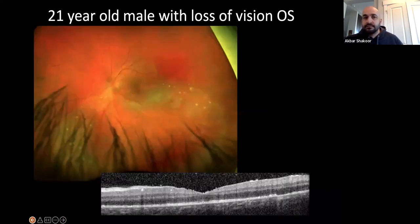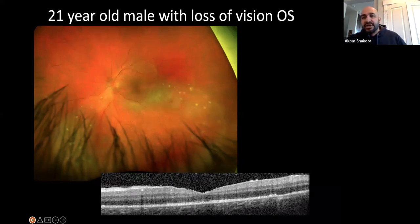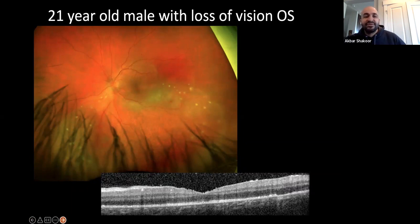Any questions? One thing not included in this presentation — because it's a large topic covered in another lecture — is birdshot. Do read about birdshot because they do like to ask about it, and it is one of two meaningful HLA associations in uveitis: HLA-A29. The other being HLA-B27, and maybe B5 and B51 for Behçet's. Do read about birdshot a little bit.